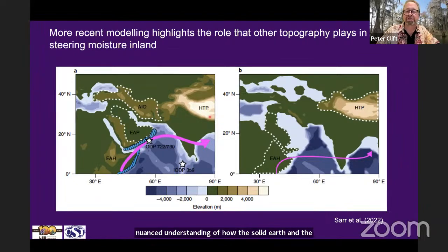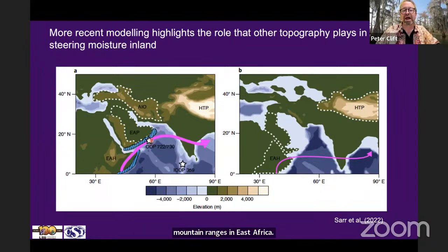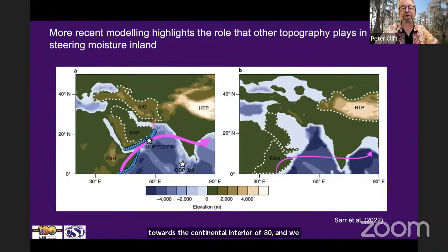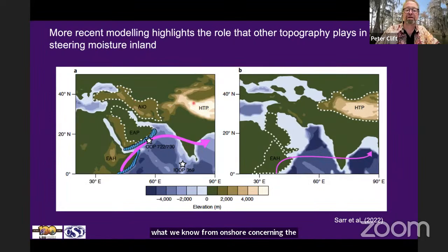In turn, there might be a feedback between rainfall at the mountain front and erosion, and therefore the exhumation of high-grade metamorphic rocks, particularly in the Himalaya. There's been a lot of debate about that, and we were curious to see if there was any evidence to substantiate these models. Climate modeling has advanced to the point where we have a more nuanced understanding of how the solid earth and the atmosphere interact. Work by Anta Clarissa in France has shown how not only the Tibetan Plateau, but also uplifting mountain ranges in East Africa, Arabia, and the Iranian Plateau might act to steer moist airstreams towards the continental interior of Asia.